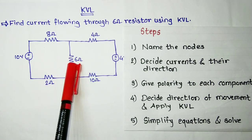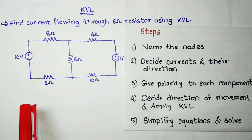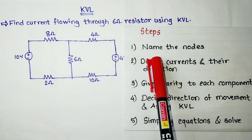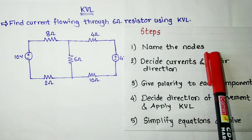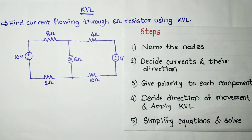This is the 6-ohm resistance and we have to find the current flowing through it. Note that we are using KVL, which is also known as the branch current method. The steps for solving using KVL are: first, name the nodes; then, number two, decide the currents and their directions.